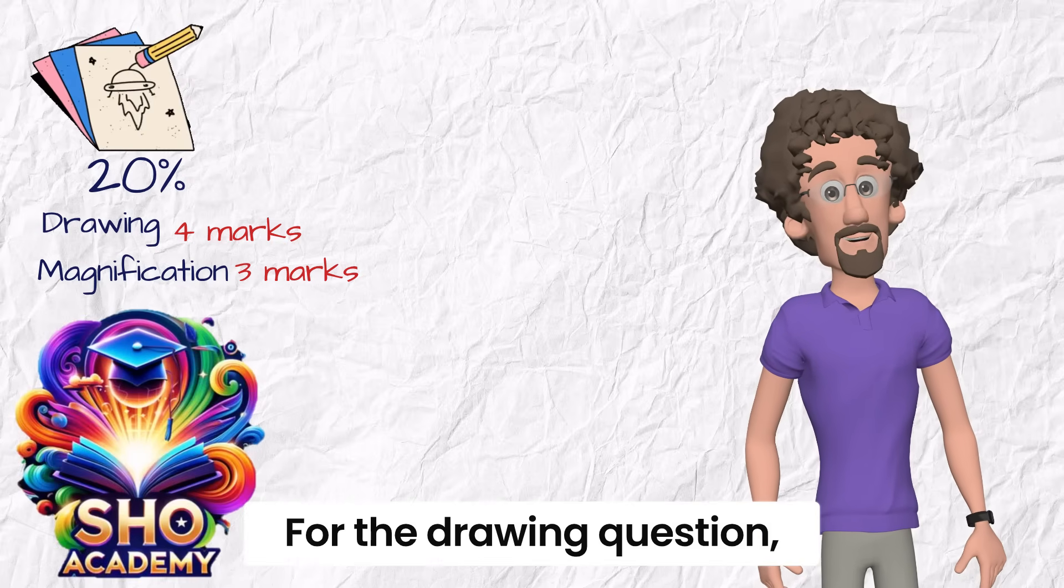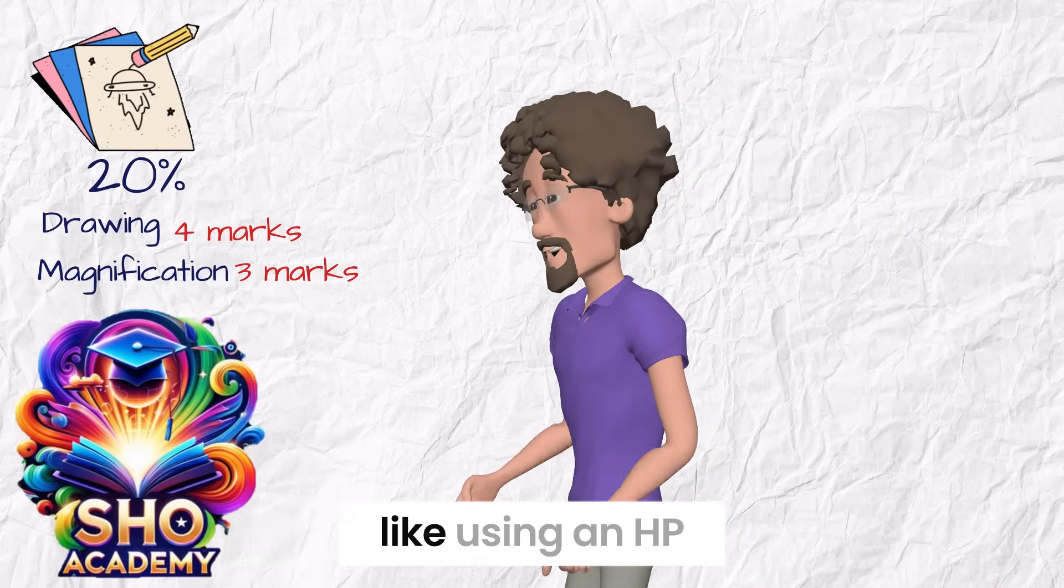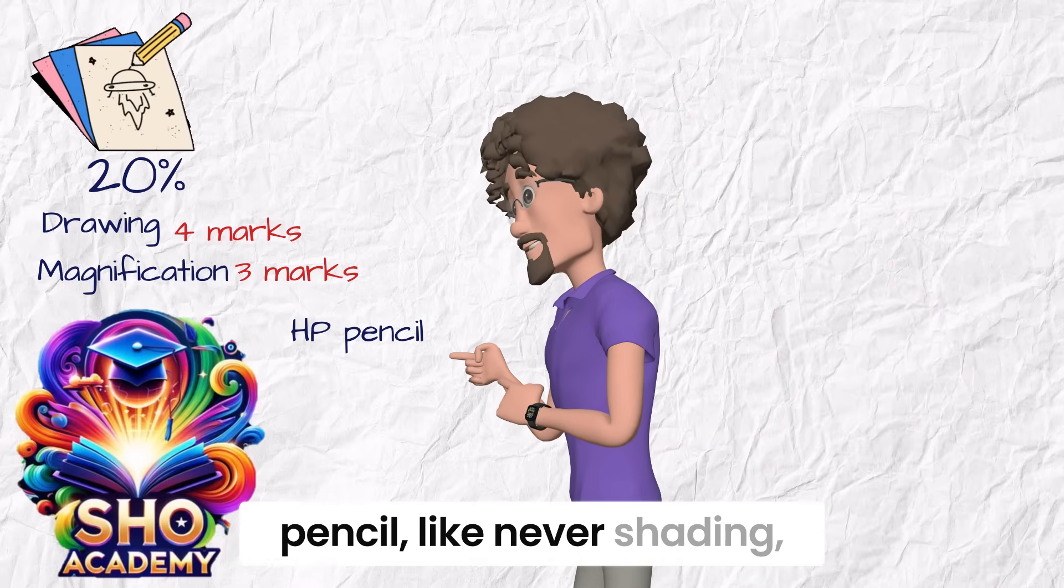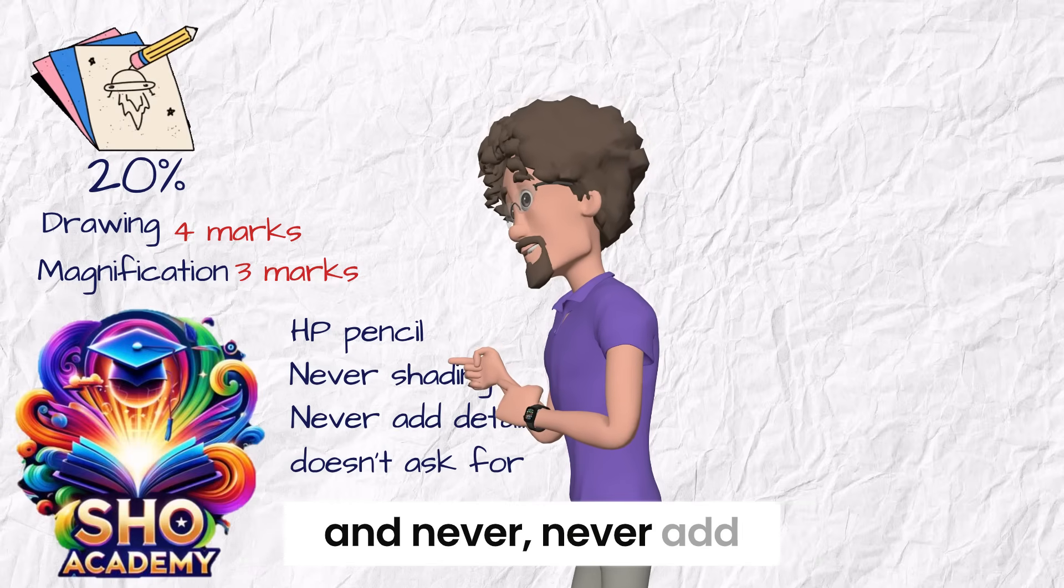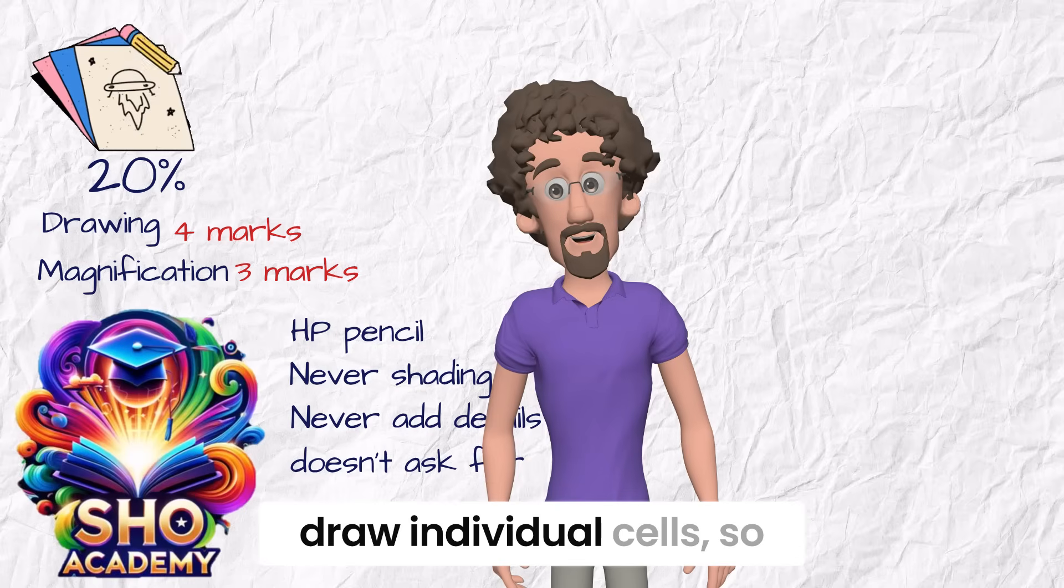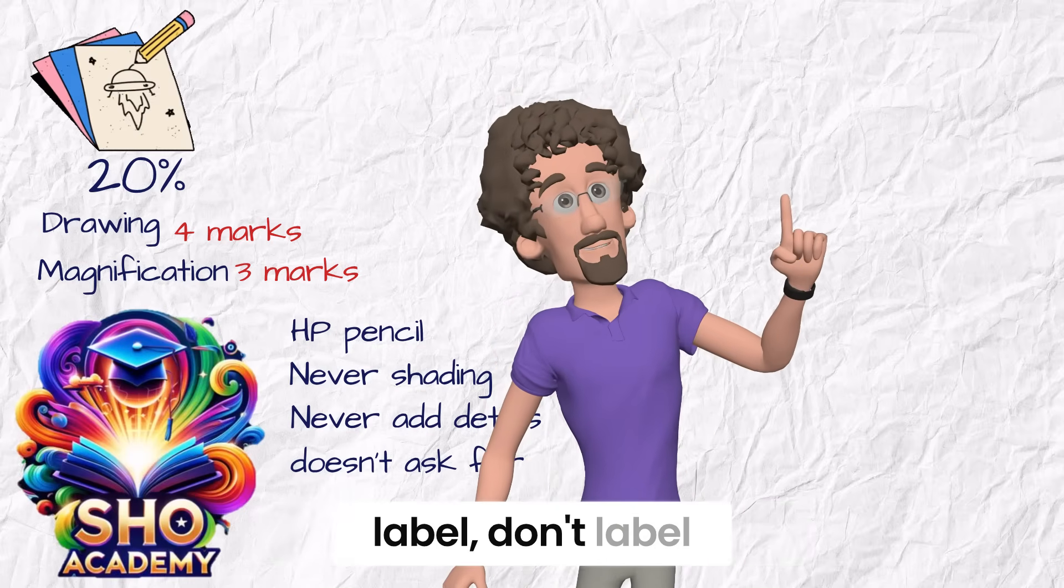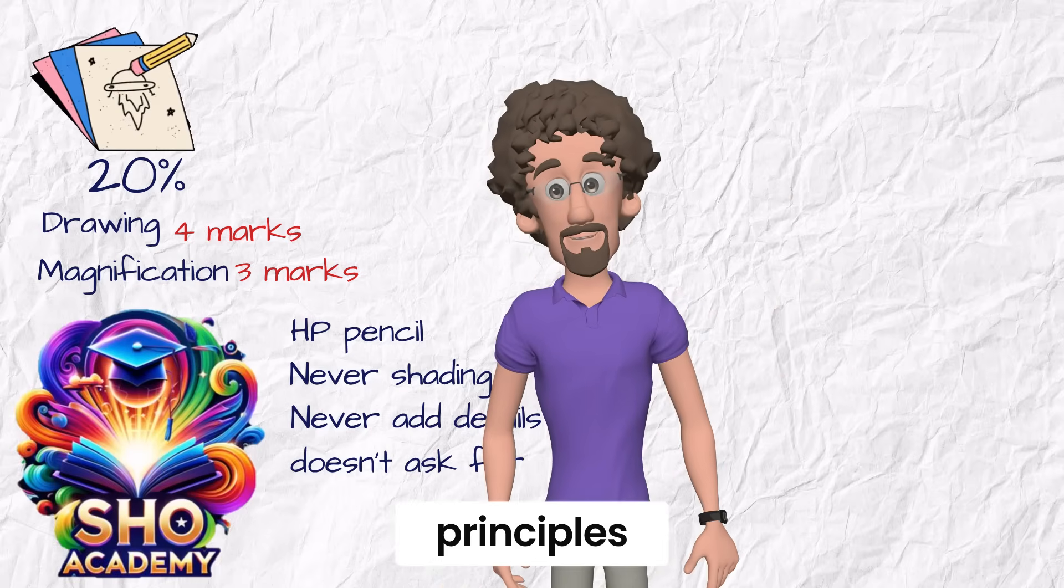For the drawing question, there are some points we previously agreed upon in the last video, like using an HP pencil, like never shading, and never add details he doesn't ask for. If he said don't draw individual cells, so don't draw. If he said don't label, don't label. These are your main principles.